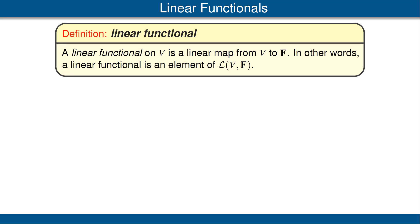Now we deal with another class of special linear maps and we also give them a special name. Specifically, a linear functional on our vector space V is a linear map from V to the scalar field F. In other words, a linear functional is an element of the vector space of linear maps from V to F.